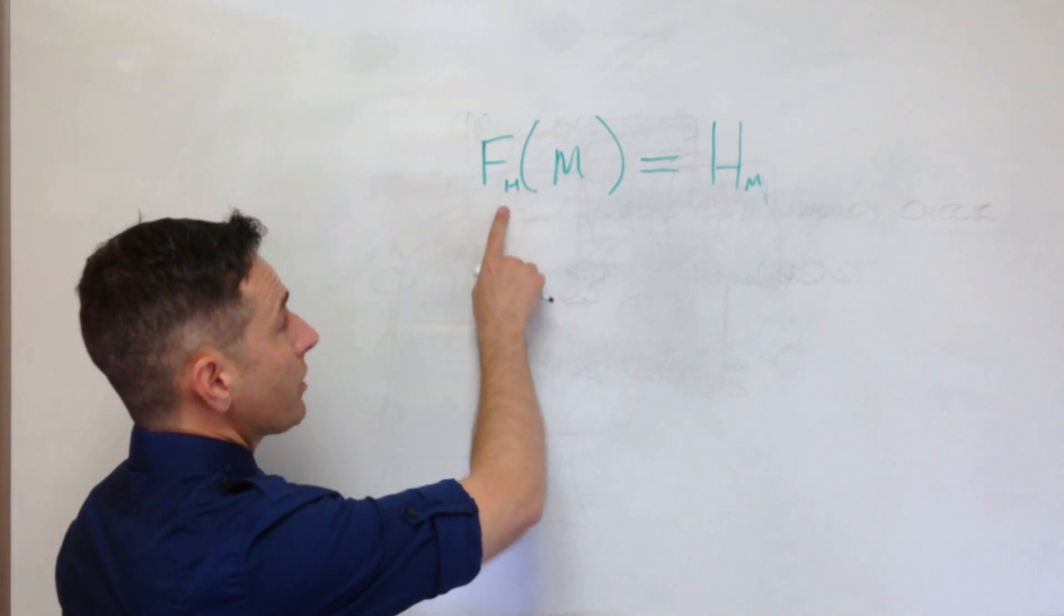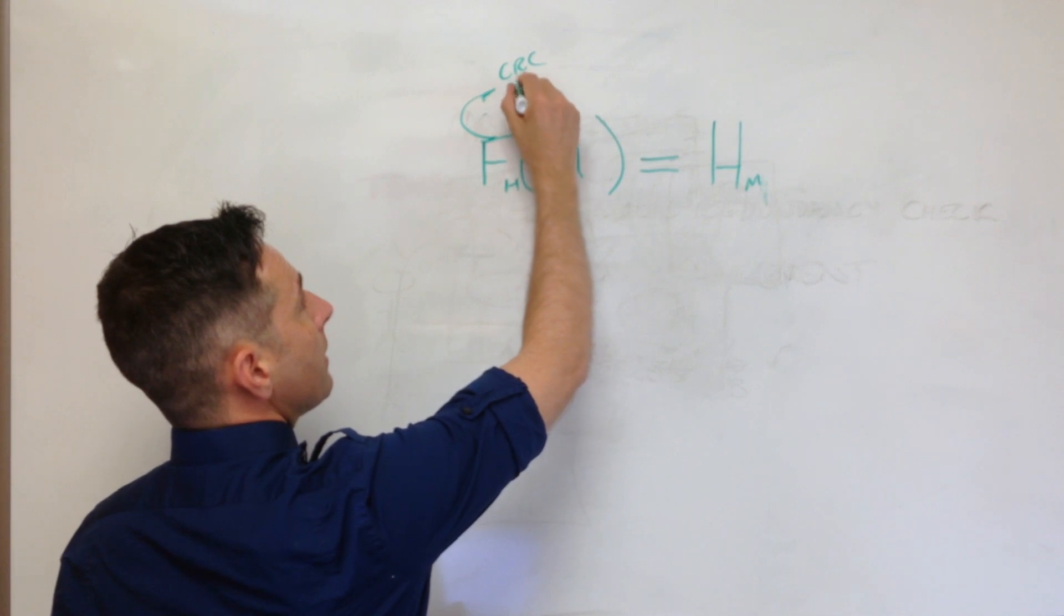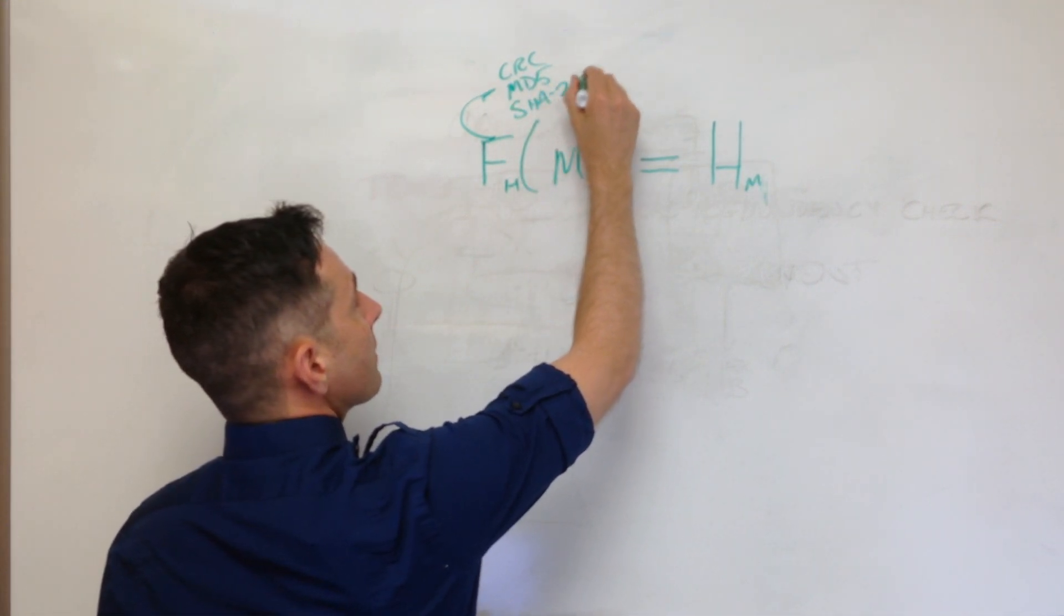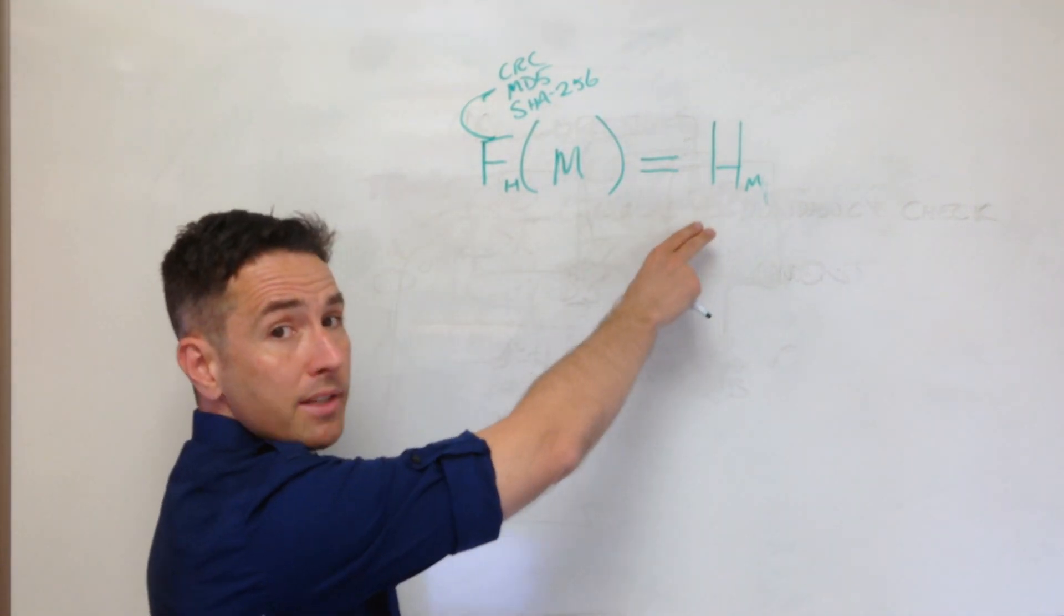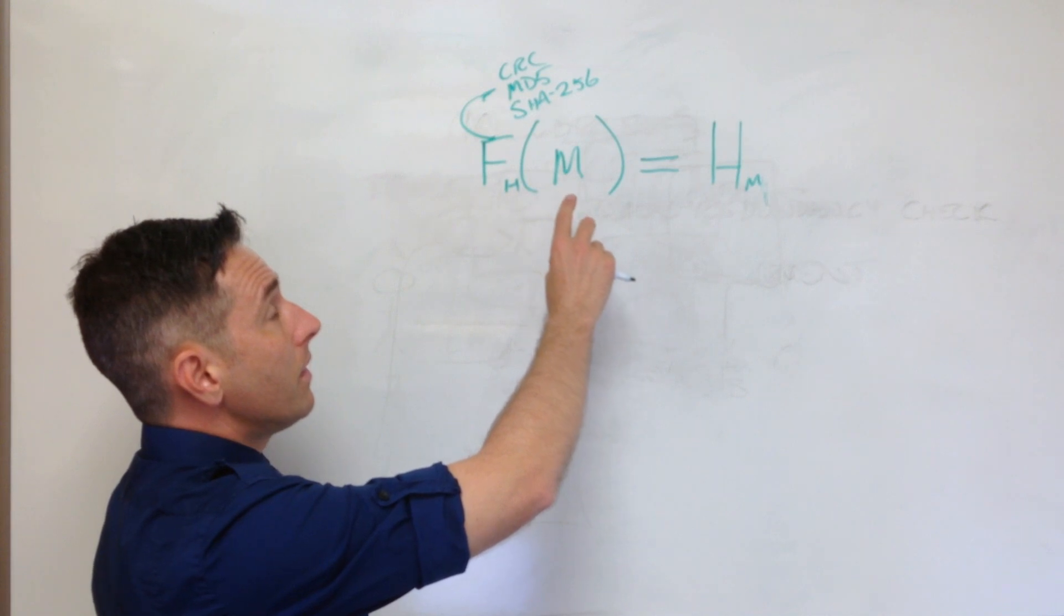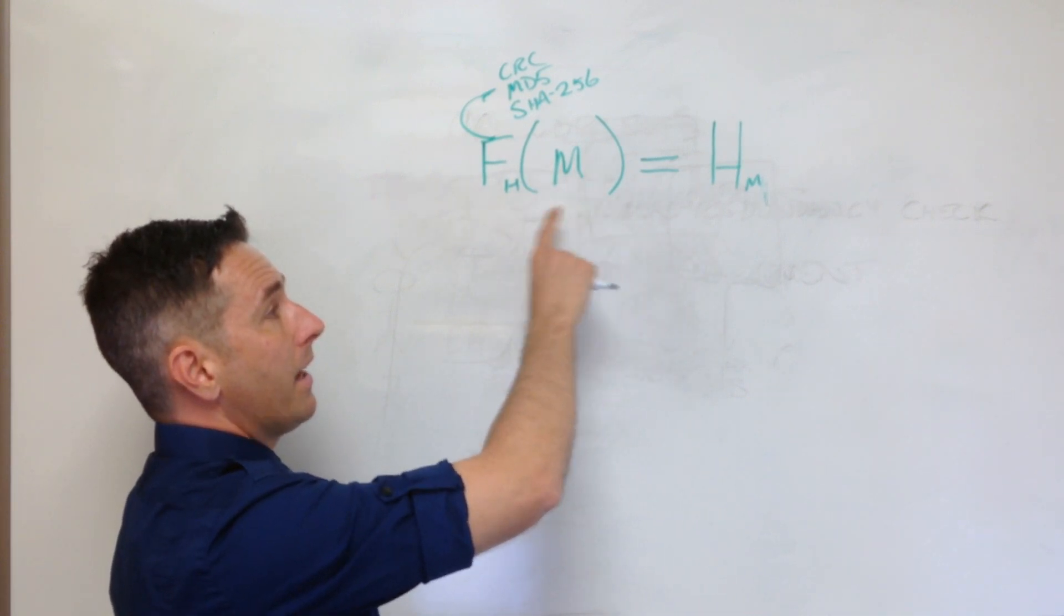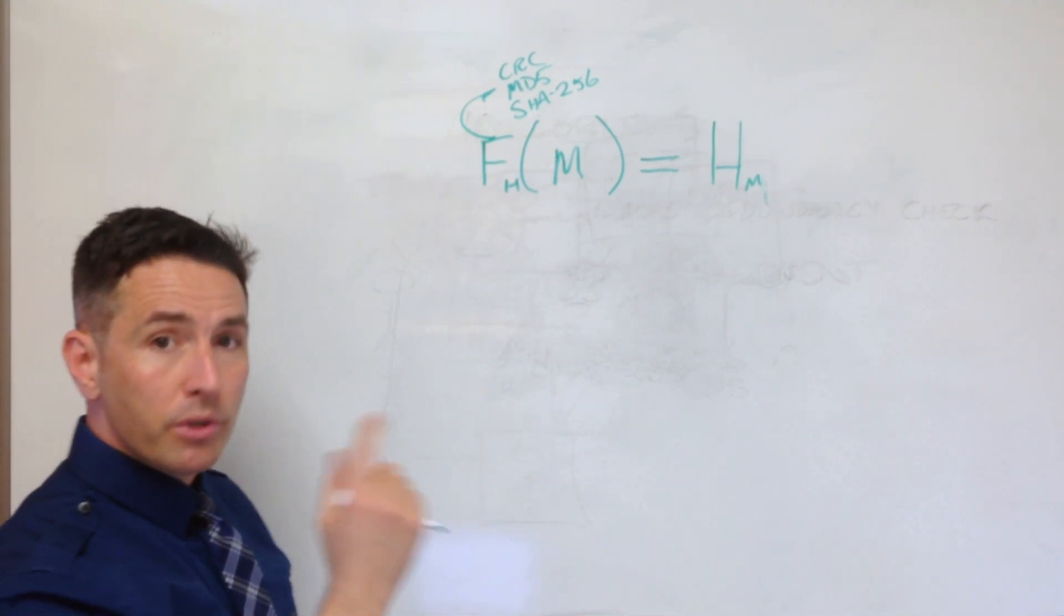This function could be the CRC function, it could be the MD5 function, it could be the SHA-256 function. All of those will produce different fingerprints, but if you give it the same digital object again, each one of these will produce the same fingerprint that they produced last time.